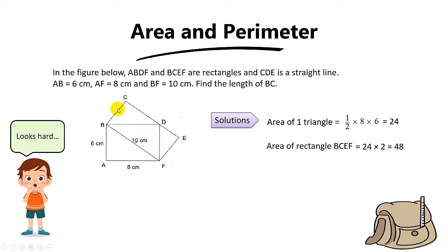And now how do we find this length over here? We simply take the area divided by the length. So 48 divided by 10, you get 4.8 cm, and this will be the breadth of the rectangle, which is the length of BC.